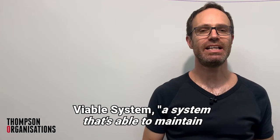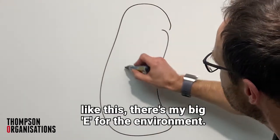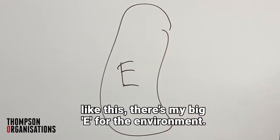Viable System - a system that's able to maintain a separate existence. An existence in what? The environment. So what we're going to do is draw it up like this. There's my big E for the environment.